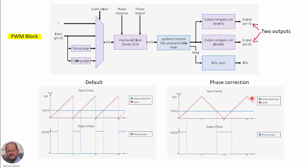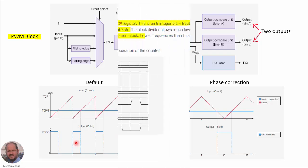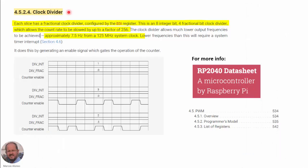Today we are going to focus on the default mode, which uses a typical ramp as we have seen many times in previous videos, and we will be generating a PWM signal with a variable duty cycle and variable frequency. A very important element in the PWM module is the clock divider, because with this we can adjust the frequency of the PWM signal. Each slice has a fractional clock divider configured by the div register, which is an 8-integral bit, 4-fractional bit clock divider — very flexible. With this, we can reduce the count rate by a factor of 256.